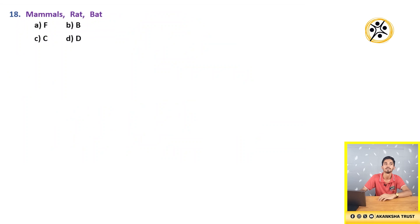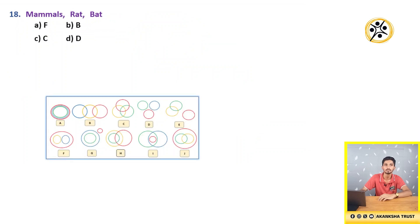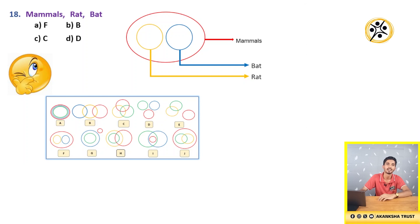18th question: Mammals, Rat, Bat. First circle represents mammals. Inside mammals, we are having rat as well as bat. Both rat and bat are mammals. Hence, both rat and bat are placed within mammals. By considering this figure, it holds good with option A, i.e. F.